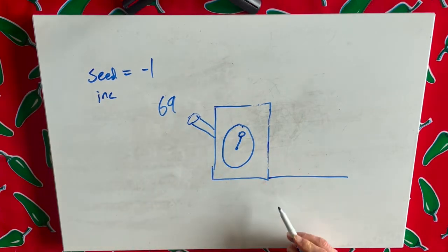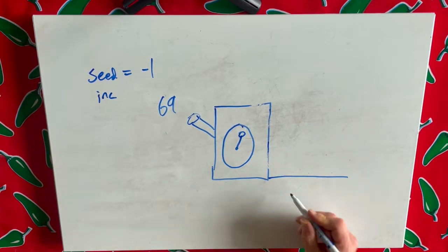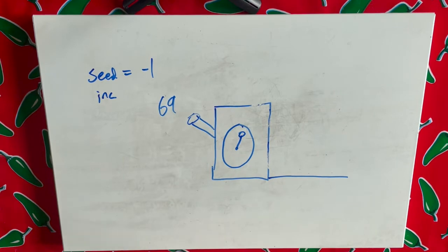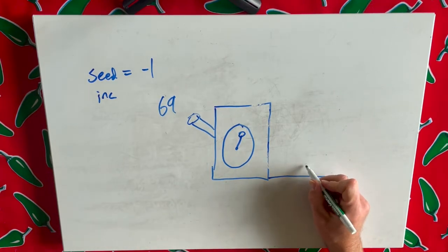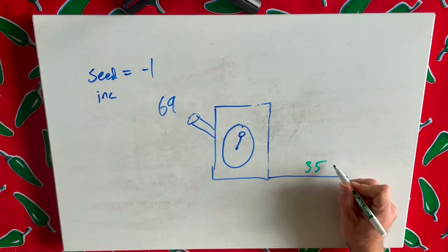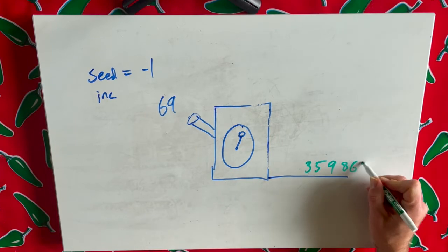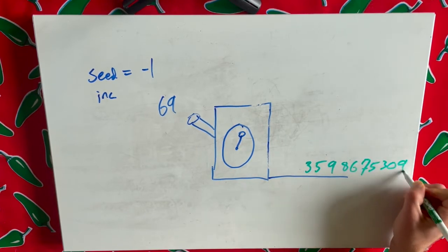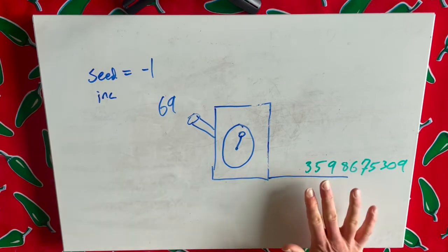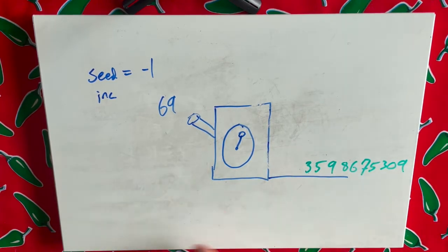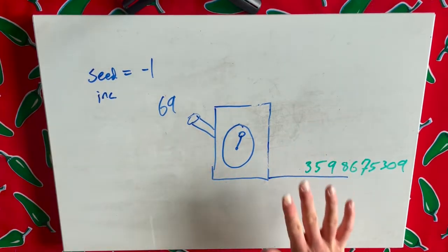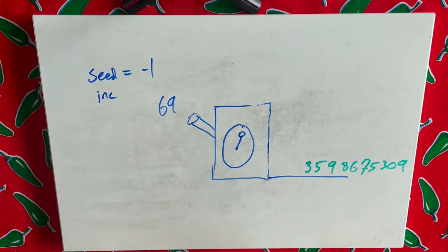We plunk that into the machine, and it turns the handle, and off the other side, we get something like 3, 5, 9, 8, 6, 7, 5, 3, 0, 9. And that would be this string of random variables that would be scattered on the latent space that would create different weightings that would allow for different renderings or patterns.